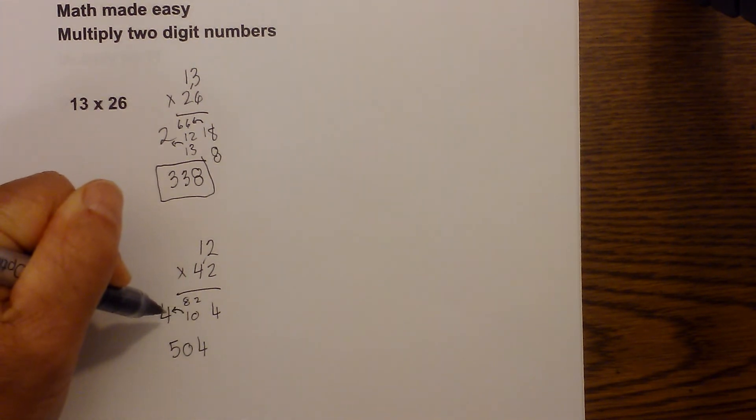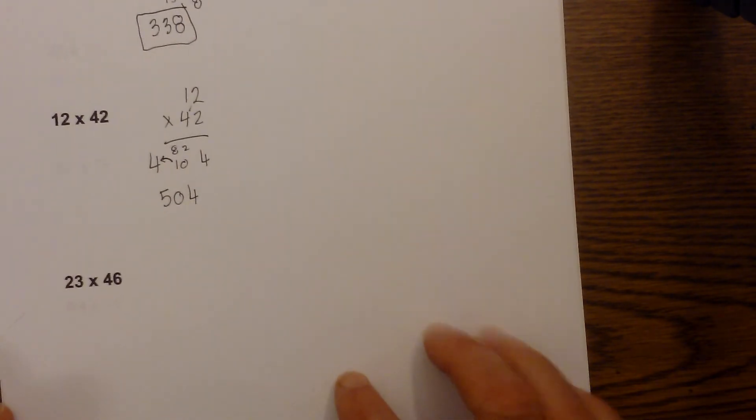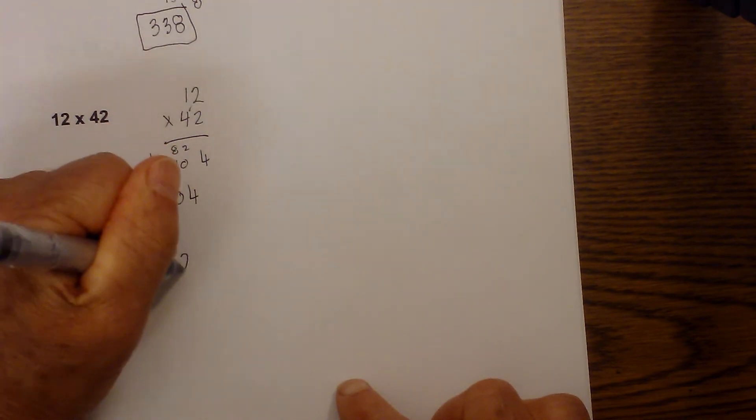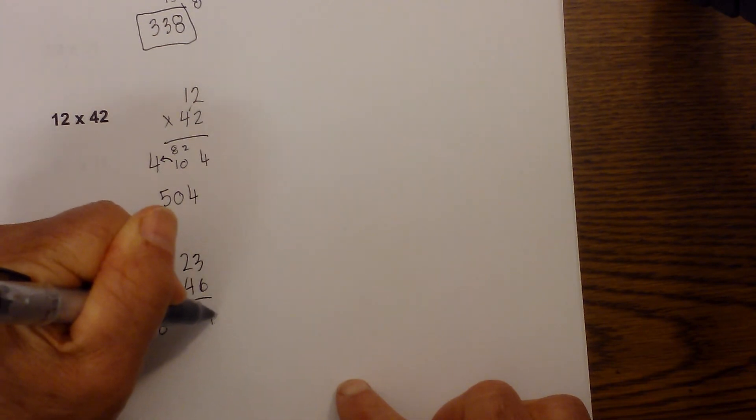How about 23 times 46? Again, I will rewrite. And 2 times 4 is 8. Criss cross, we have 12 plus 12 which is 24. And then we have 6 times 3 is 18.